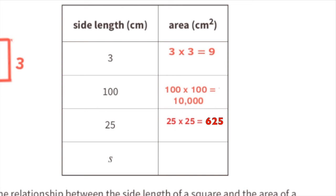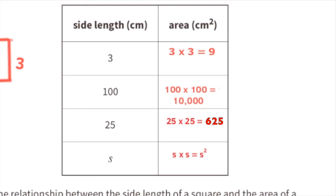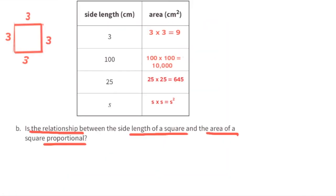The third square has side lengths of 25 centimeters: 25 times 25 equals 625 centimeters squared. The final square has a side length of s: s times s equals s squared, so the area is s squared centimeters squared. Part B asks whether the relationship between side length and area of a square is proportional.